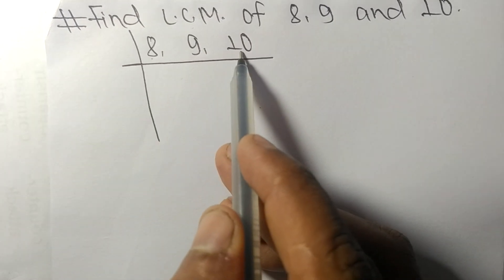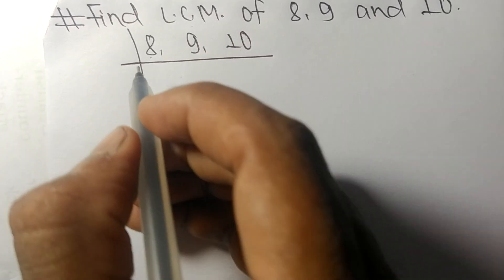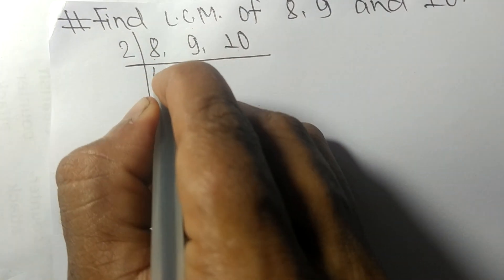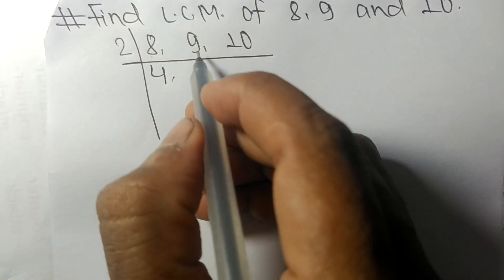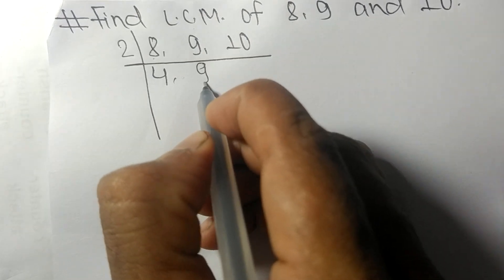8 and 10 are exactly divisible by 2. 2 times 4 means 8, 9 is not divisible so it stays the same.